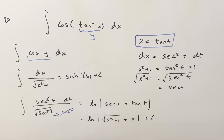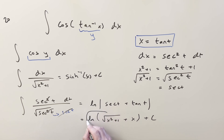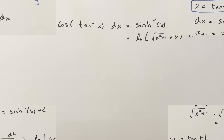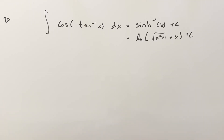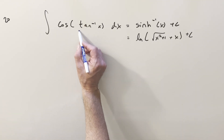Notice that √(x²+1) + x is always going to be positive, so we can drop the absolute values and write it in parentheses. That's method 1.